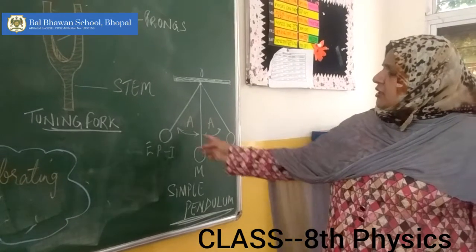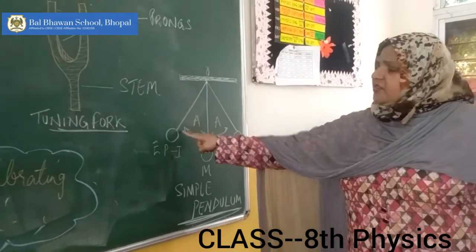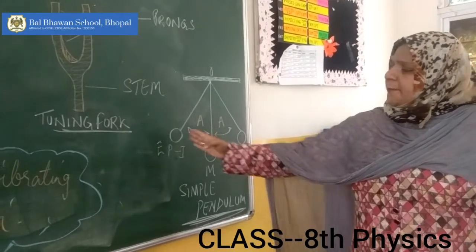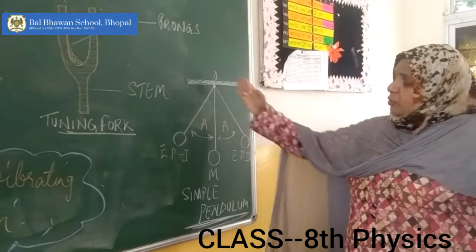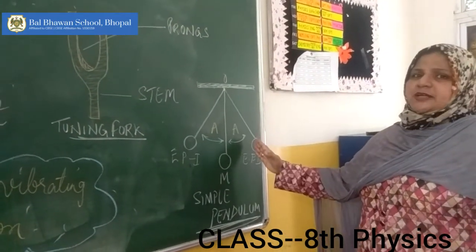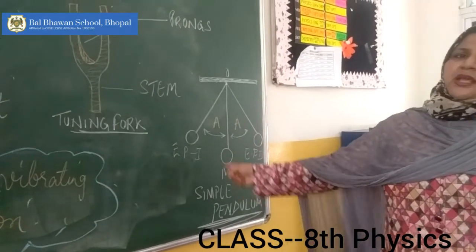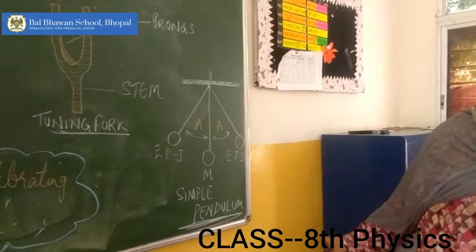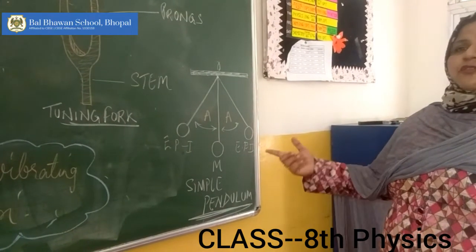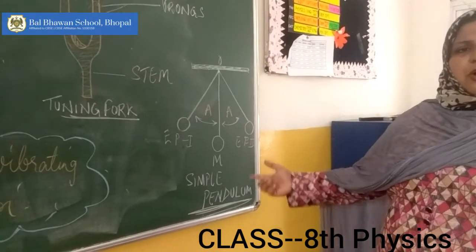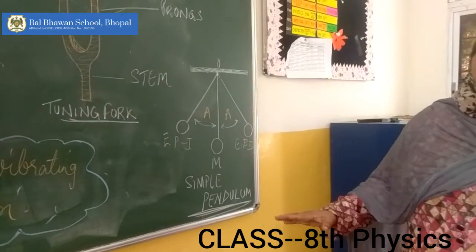The third definition is amplitude. What is amplitude? You can see in this case — A is the amplitude. Simply, it is the distance between the mean and the extreme position. For example, if it is 5 cm on this side, it will also be 5 cm on the other side. So amplitude is nothing but the distance between the mean and the extreme position of a vibrating body. Now, don't get confused — why am I referring to a vibrating body instead of a pendulum? It is because we are learning about sound, and we will define vibrations and vibrating body instead of a simple pendulum.